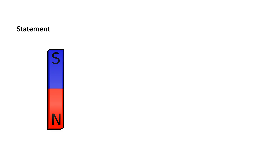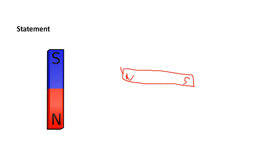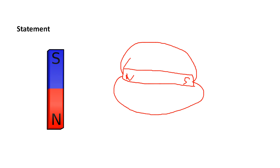You must have done one of the experiments with this magnet. Suppose this is a bar magnet with a North Pole and a South Pole. One of the methods to do the experiment was to sprinkle the iron filings, and what you must have seen is that the iron filings have taken this shape.